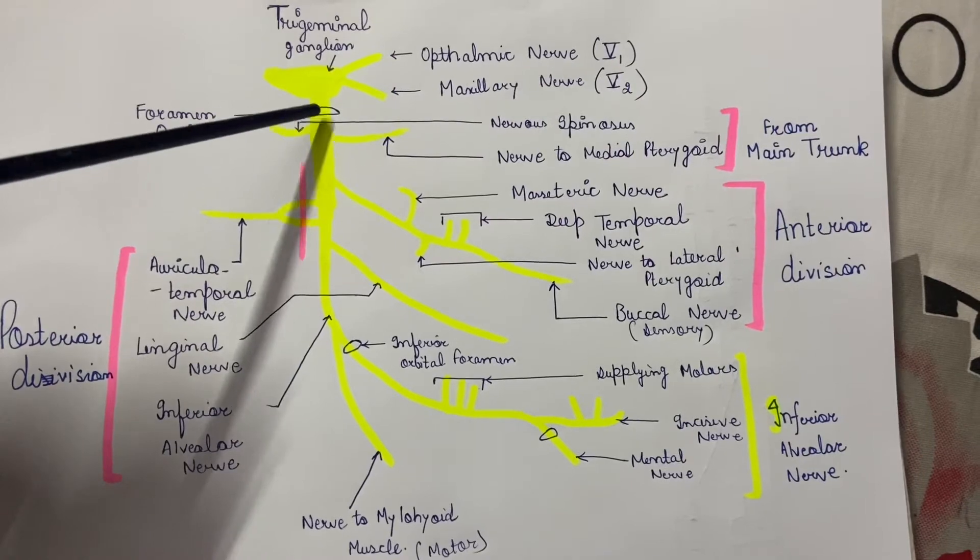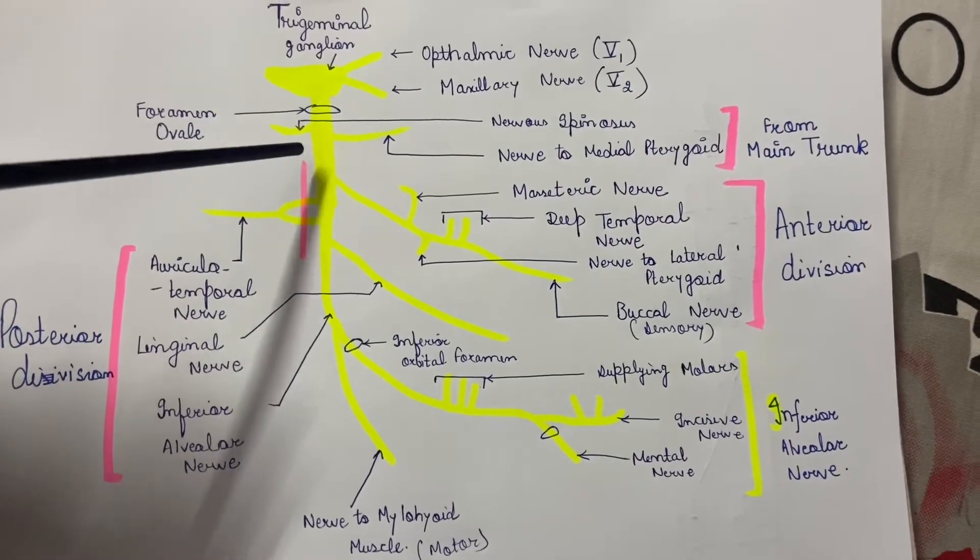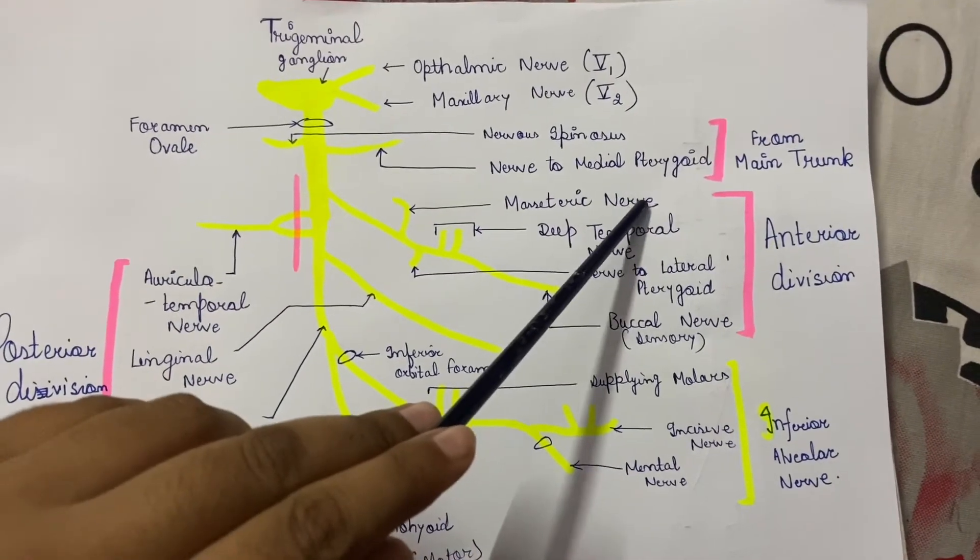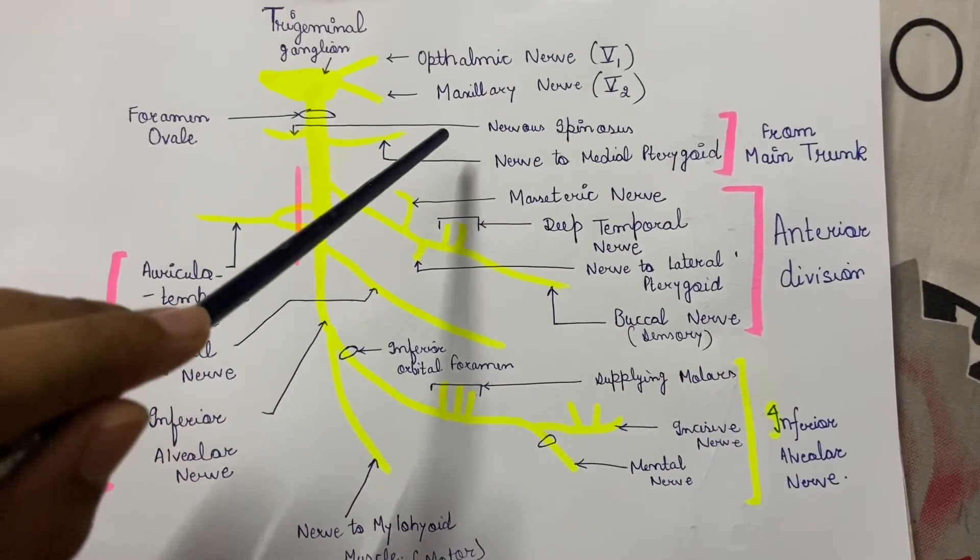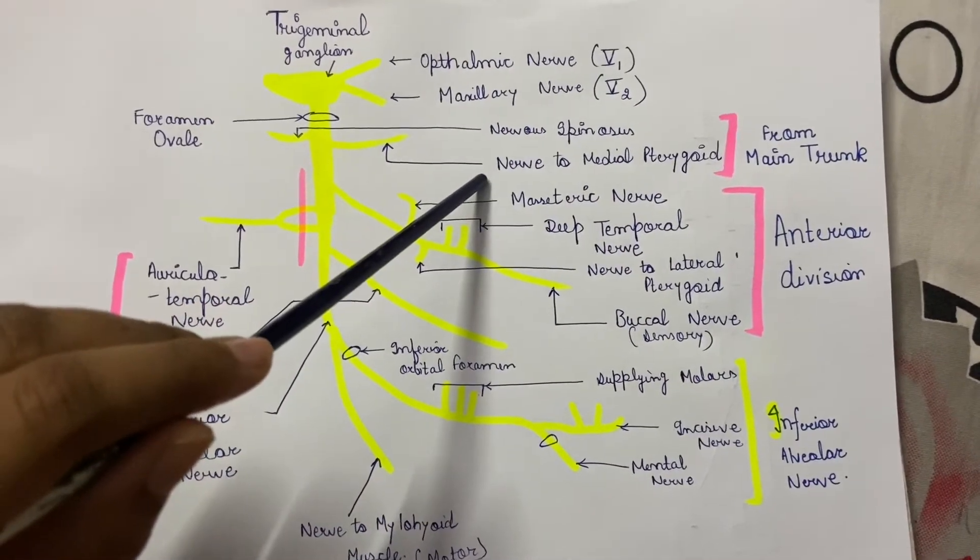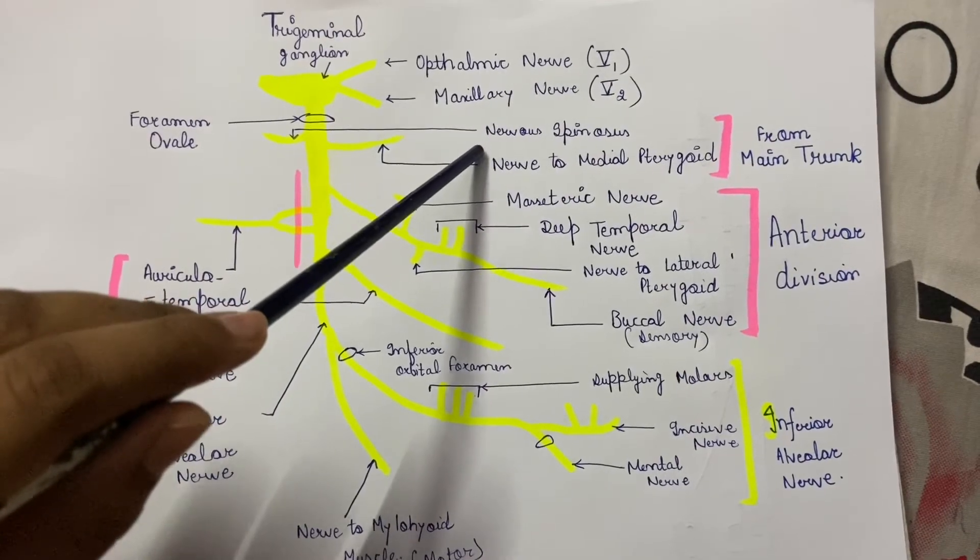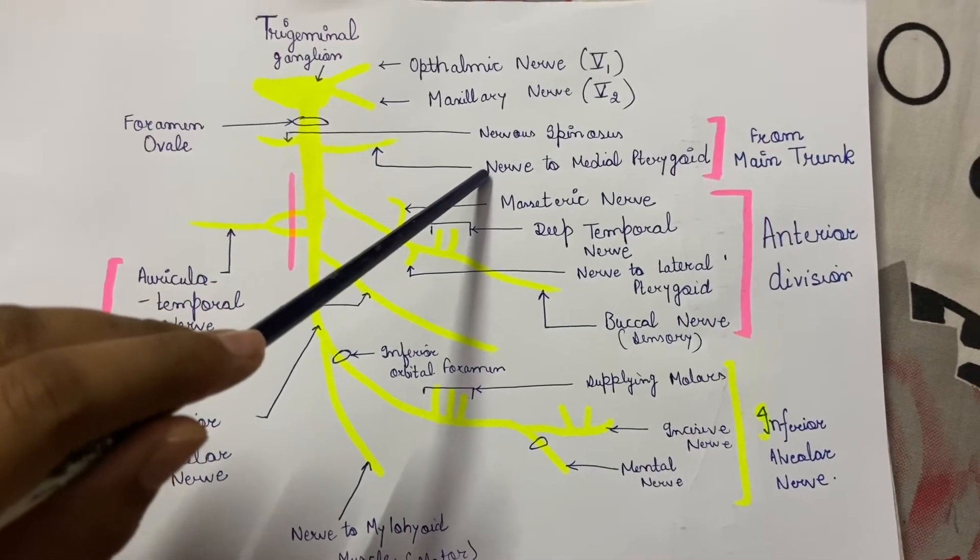First of all, we will talk about the main trunk. The main trunk of the mandibular nerve gives two branches: the nervus spinosus and nerve to the medial pterygoid.